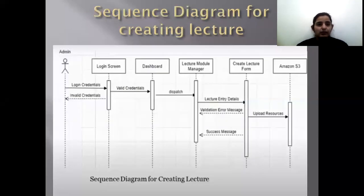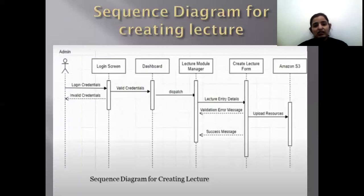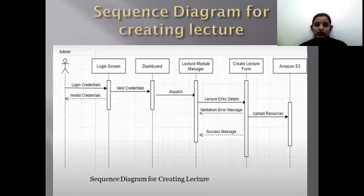Now comes the sequence diagram which shows how the process works. An admin can log in first, which takes them to the login screen and then to the dashboard if credentials are valid. It then goes to the lecture module manager where the admin can create a lecture and enter lecture details. If not successful, a validation error message is shown; if successful, a success message is given after uploading resources to Amazon S3.